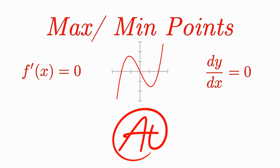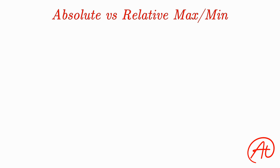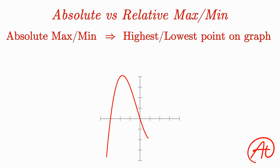First, let's talk about the two different types of maximums and minimums: absolute versus relative. An absolute max or min is the absolute highest or lowest point anywhere on the graph. So if we looked at this curve here, this point would be the absolute minimum, and this point would be the absolute maximum.